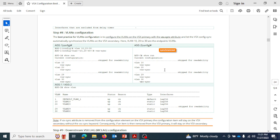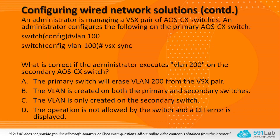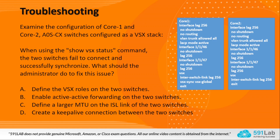Going through the answers: Option A — the primary switch will erase VLAN 200 from the VSX pair — no, this won't happen as there is no matching configuration item in the primary with VSX-sync. Option B — the VLAN is created on both primary and secondary — no, VLAN created on secondary won't replicate to primary, so this is wrong. Option C — the VLAN is only created on the secondary switch — yes, VLAN 200 will be created on the secondary; this is a valid scenario. Option D — the operation is not allowed and a CLI error is displayed — no, it is allowed. The correct answer is Option C.